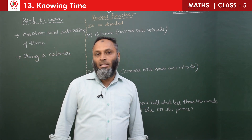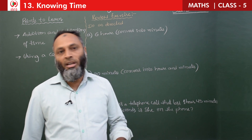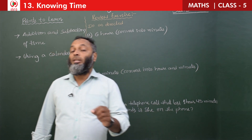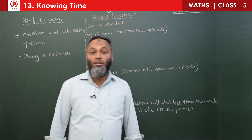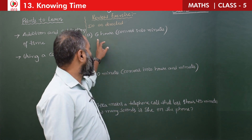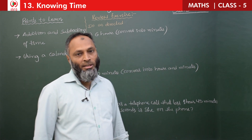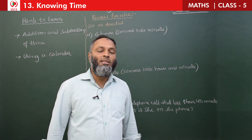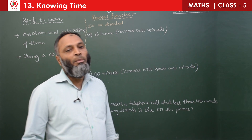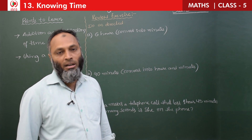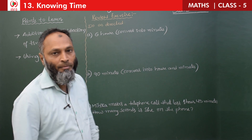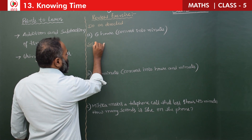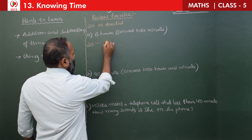In previous classes, we learned that 60 minutes make one hour. So for six hours, how many minutes? That means we should multiply 60 with 6. See here in the solution: 1 hour is equal to 60 minutes.